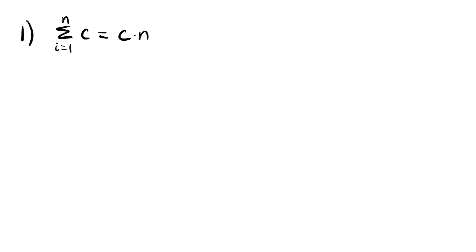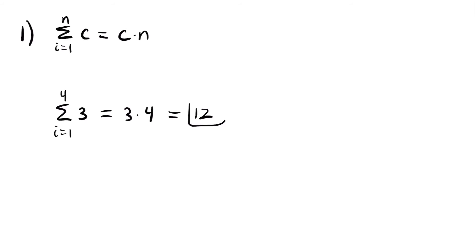Here's our first formula — we'll have four in total. This first one is about the sum of a constant. For example, if we have the sum from i equals 1 to 4 of 3, this rule says the sum of some constant c from 1 to n equals c times n. So this equals 3 times 4, which is 12. Three is our c and four is our n.